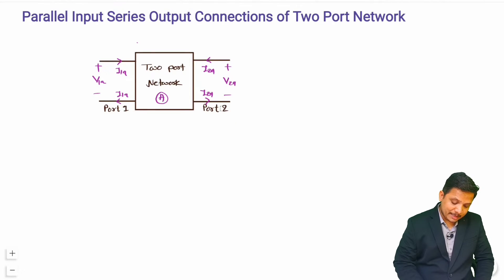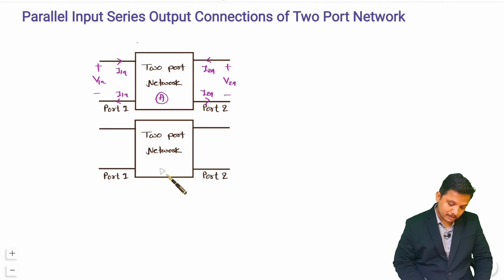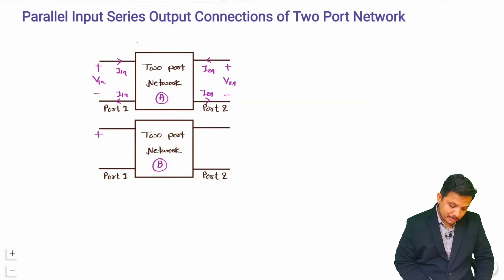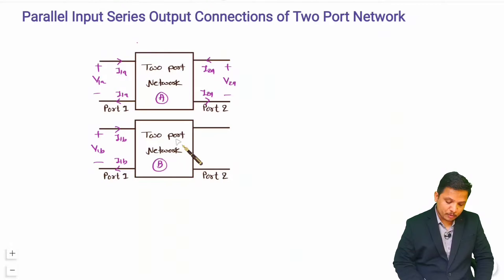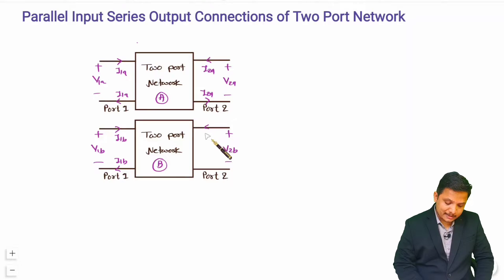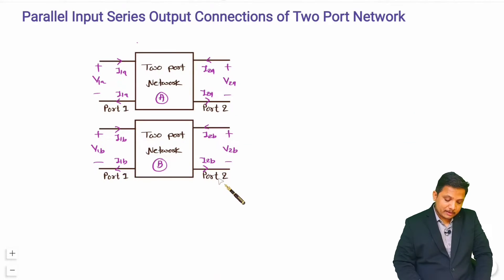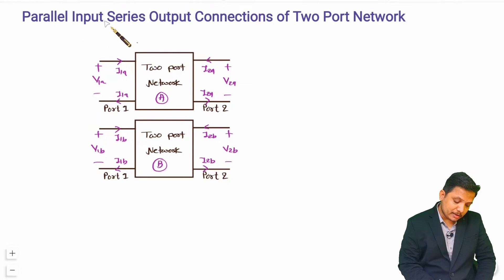Now I'll be taking a Second Two-Port Network. Let us say this is Two-Port Network B. At Port 1, voltage is V1B, current going inside is I1B and current coming out is I1B. At Port 2 of Two-Port Network B we similarly define the port voltages and currents.